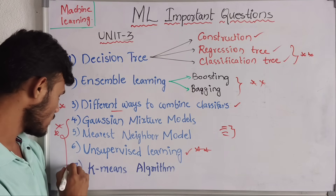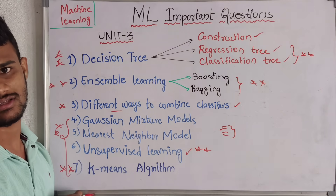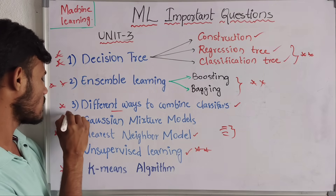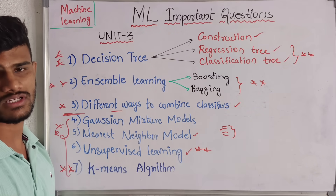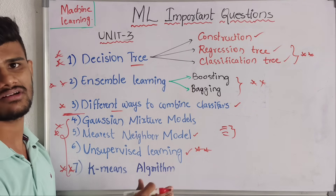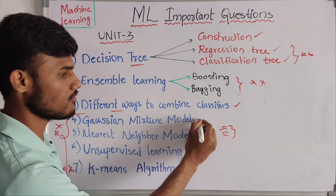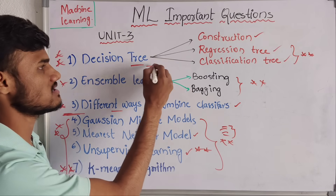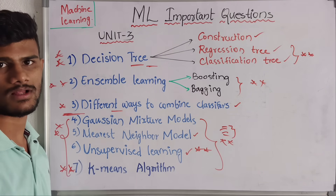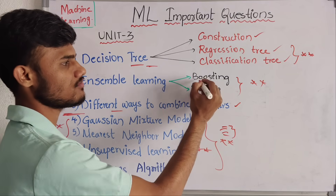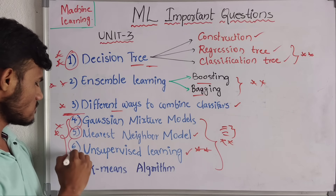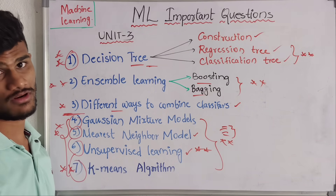This unsupervised learning question is very very important. In the first unit we have supervised, in the third unit unsupervised, and in the fifth unit reinforcement learning. Then we have another very very important question — K-means algorithm. This is K-Nearest Neighbor model. These four questions are very important. You can score 10 marks easily on decision tree or these four questions.